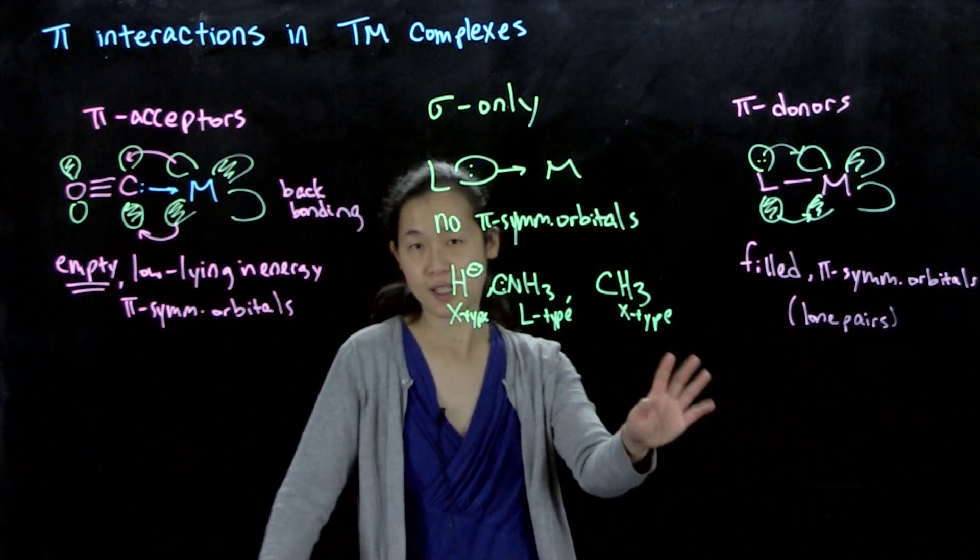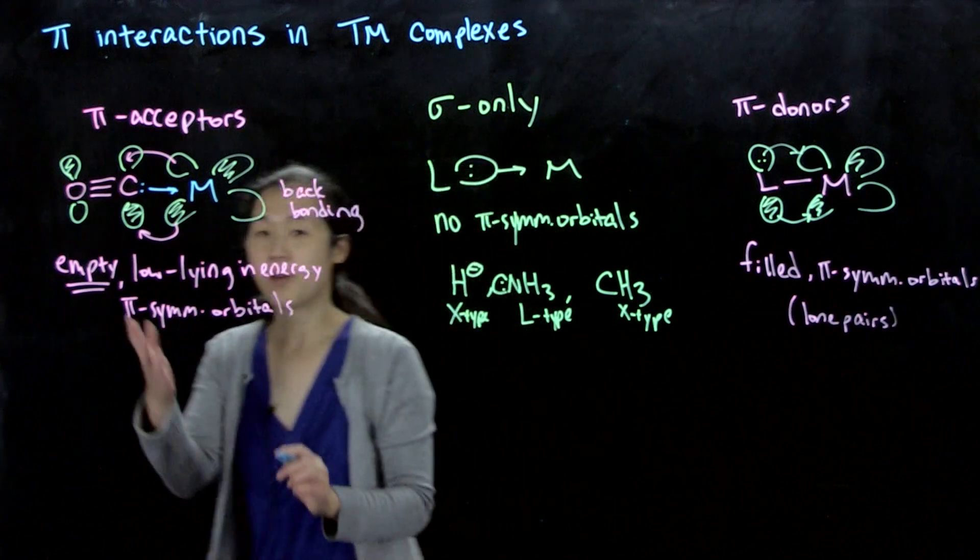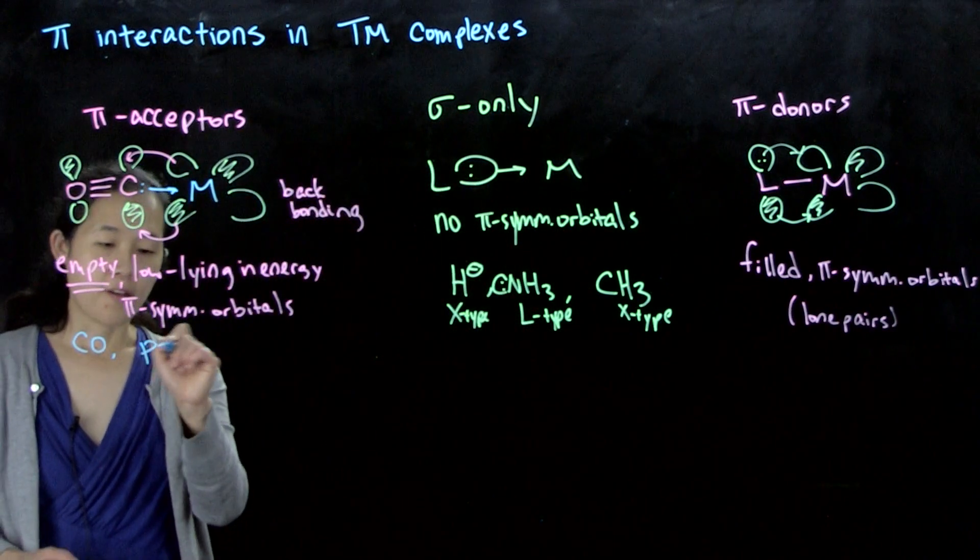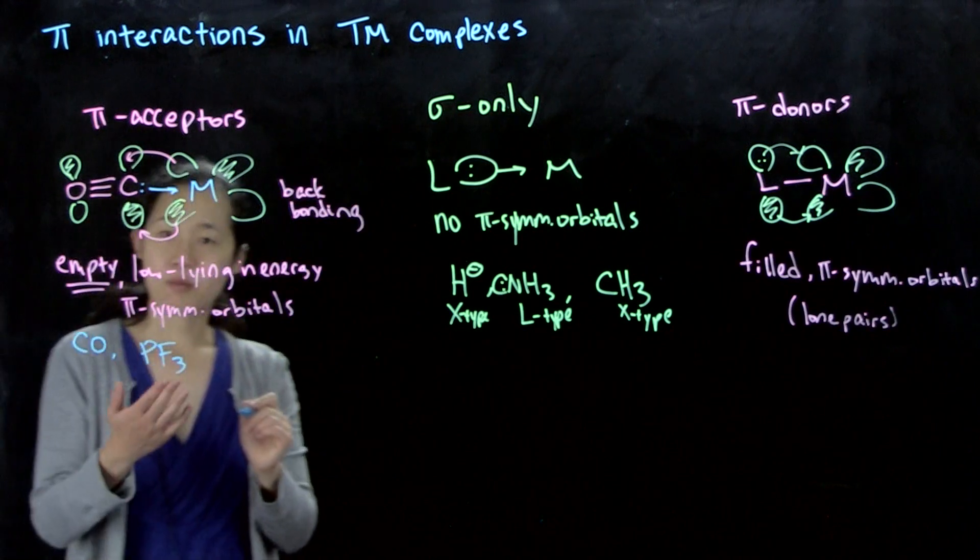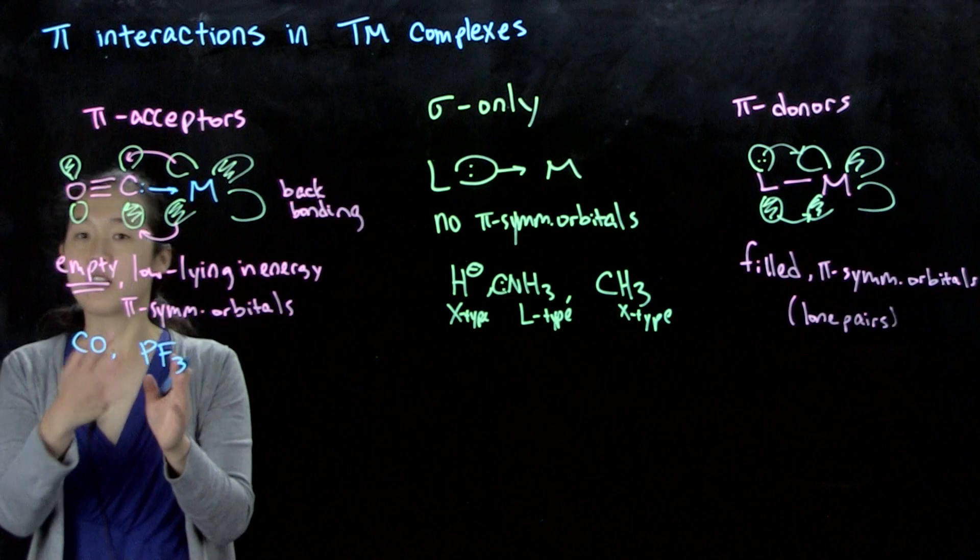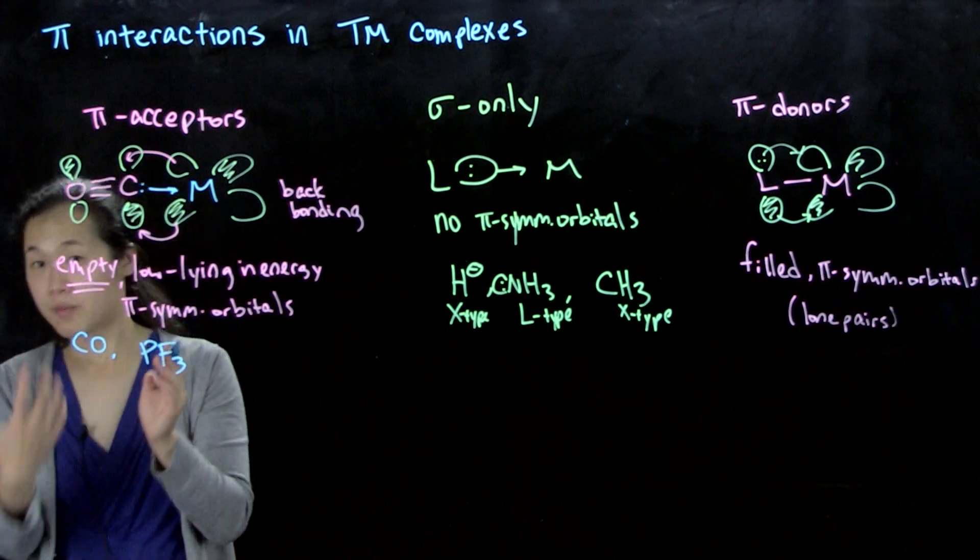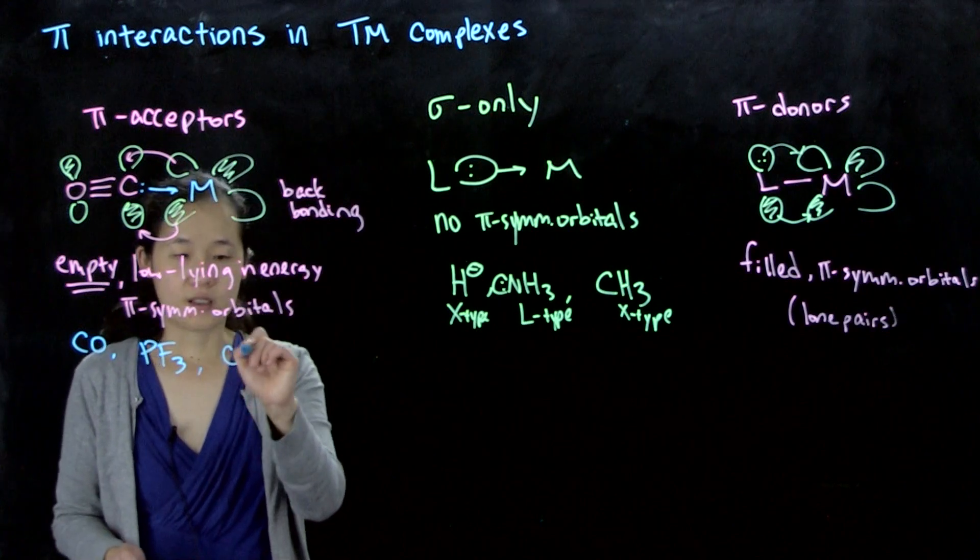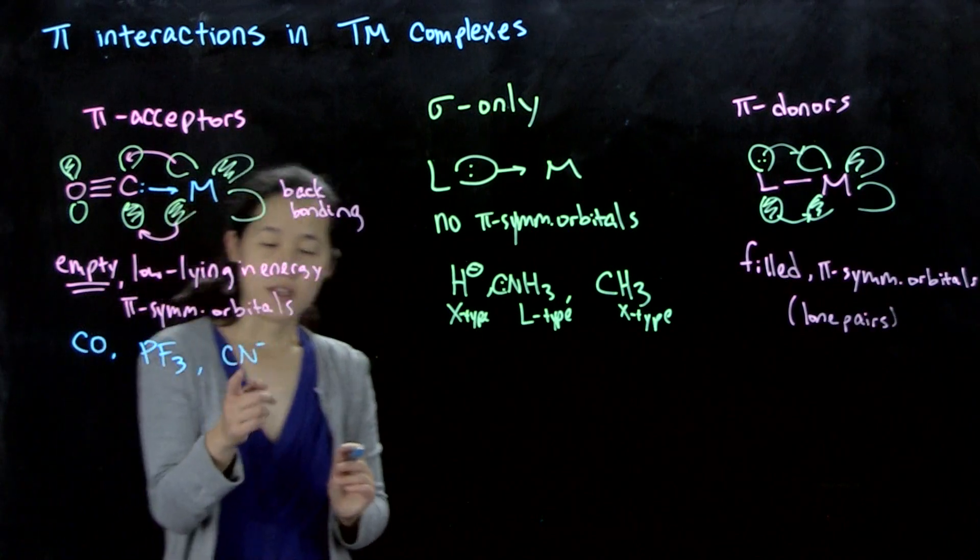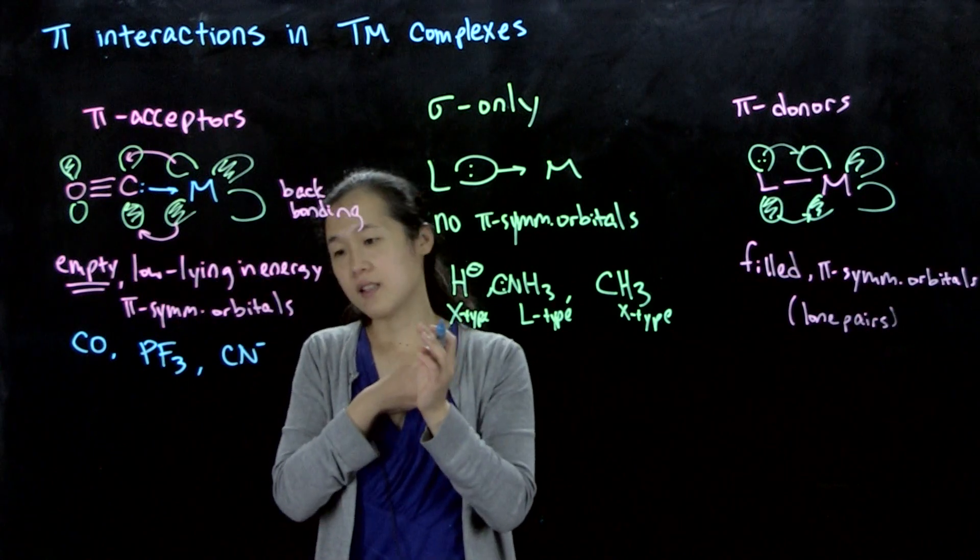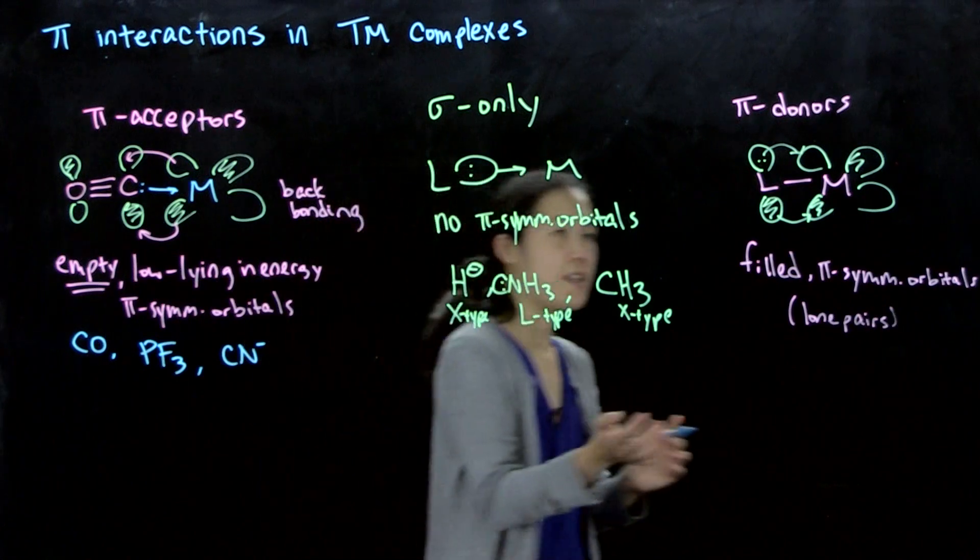I gave examples of sigma-only ligands. Good pi-acceptors would be CO. In this case, phosphines can also be pi-acceptors. We did that example on the problem set. The PF sigma-star is of pi-symmetry to the metal and it's empty. So then it can accept electron density. Other ones are CN⁻. This CN⁻ also has a triple bond between carbon and nitrogen and therefore has an empty pi-star.